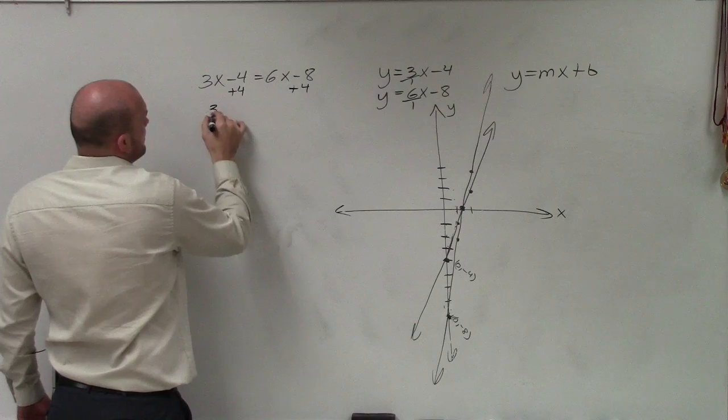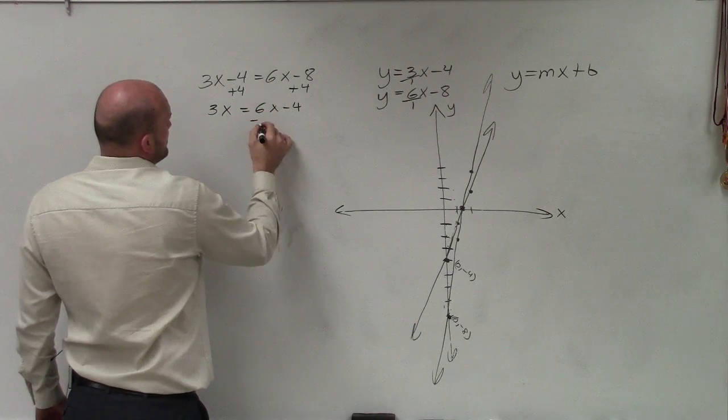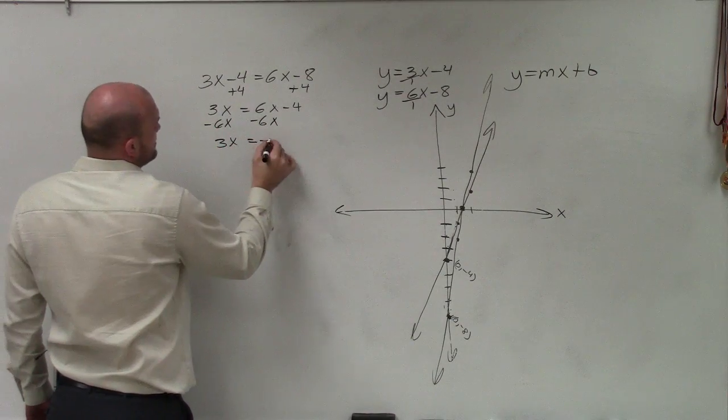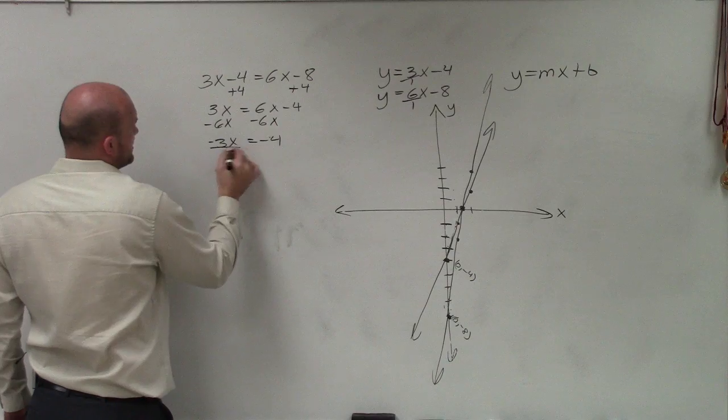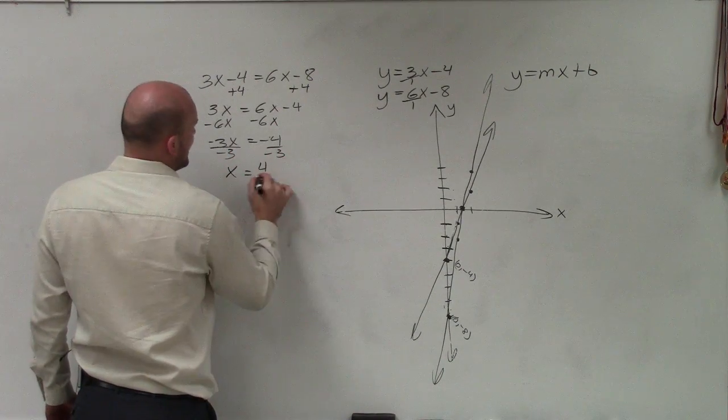So I'll add 4 to both sides. And I have 3x is now equal to 6x minus 4, subtract 6x, subtract 6x, and I get 3x equals negative 4, or negative 3x, divided by negative 3, divided by negative 3, x equals a positive 4 thirds.